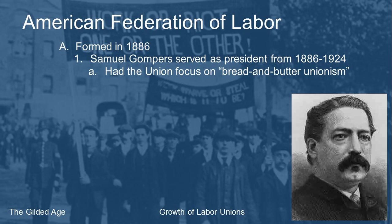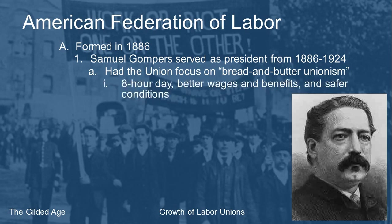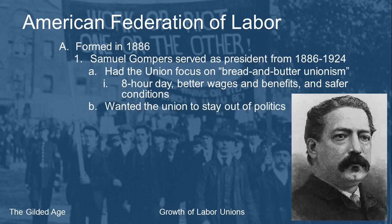Samuel Gompers and the AFL focused on what he called bread-and-butter unionism — just the basics. Gompers believed one problem with the Knights of Labor was that they had called for too much change. So Gompers said: focus on key things — the eight-hour day, and depending on the industry, better wages, better benefits, and safer conditions. That's it. That's your bread and your butter as a union.